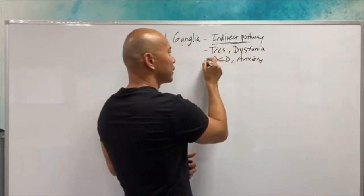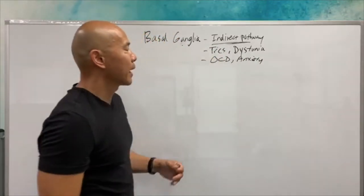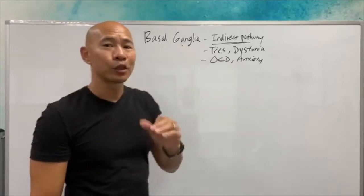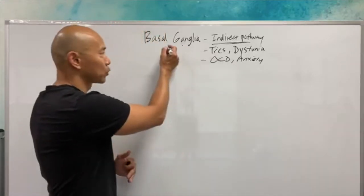So this is movement, this is mood. And this can all be associated with imbalance in this area. And I'm going to show you how this can lead to blood sugar problems.